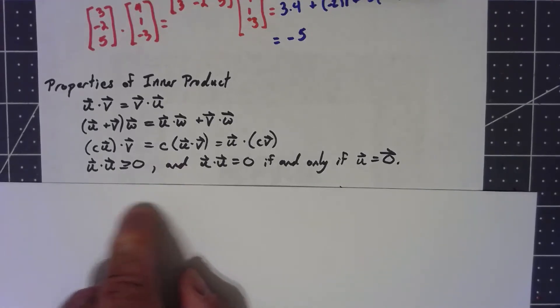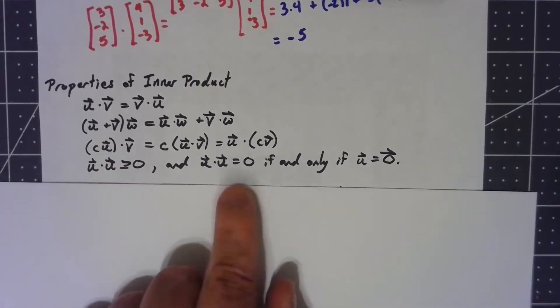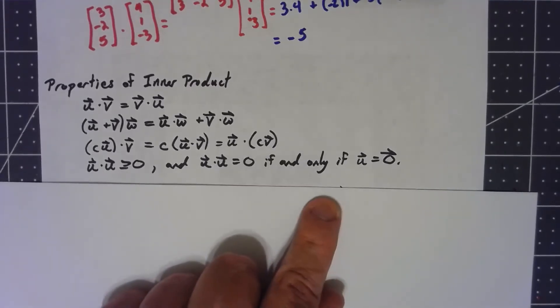And the third one's interesting. If we dot a vector with itself, then it always has to be greater than or equal to zero. And the only way it can equal zero is if we've got the zero vector.